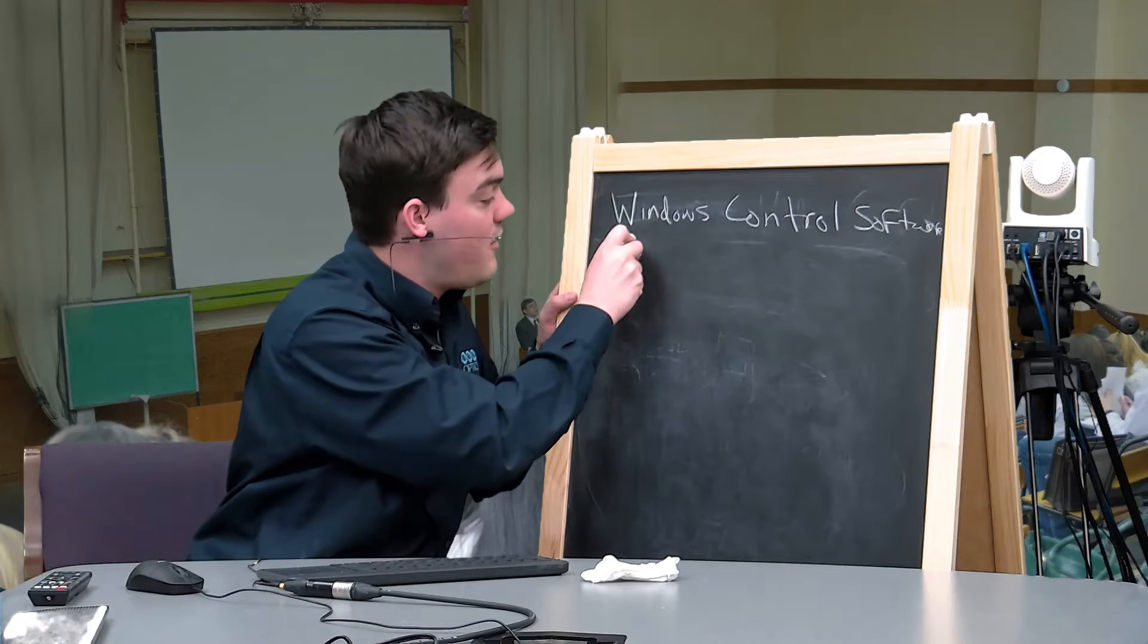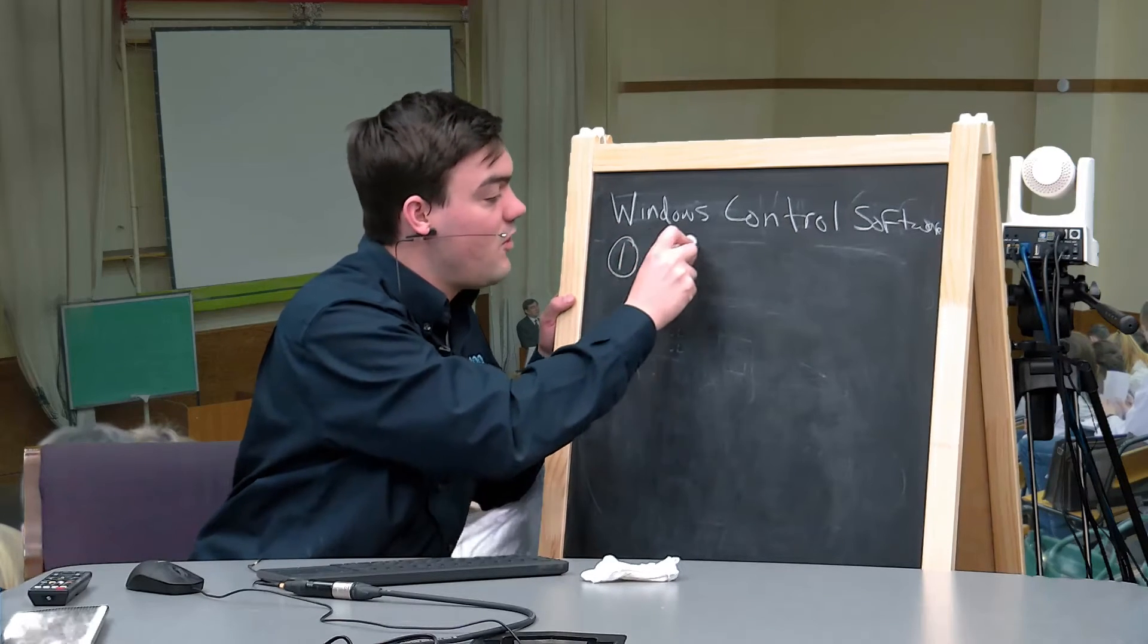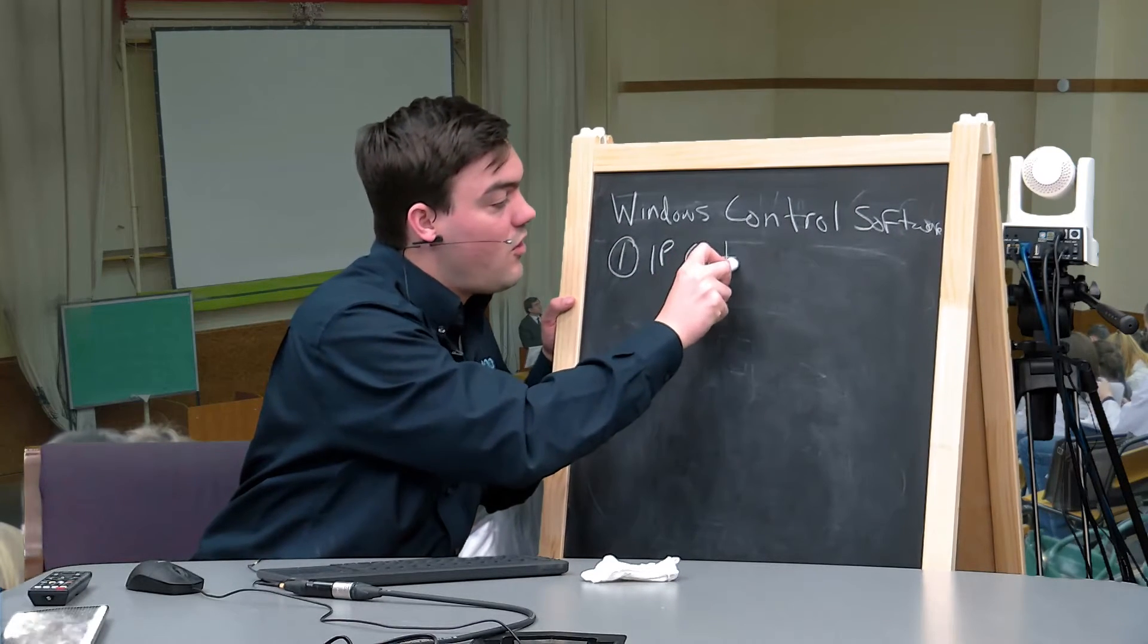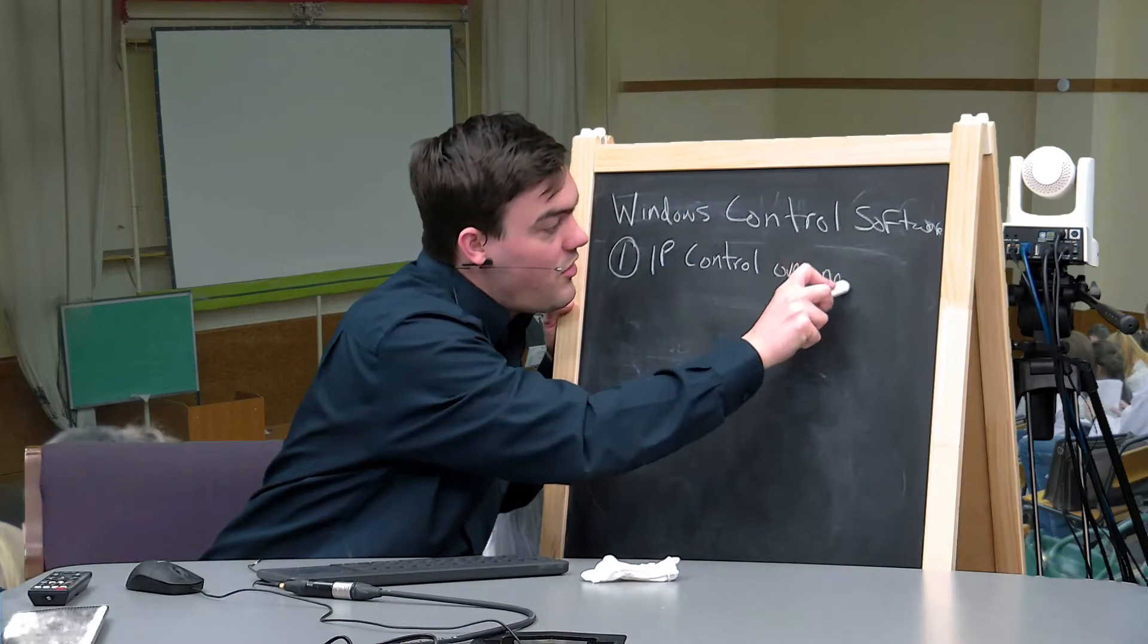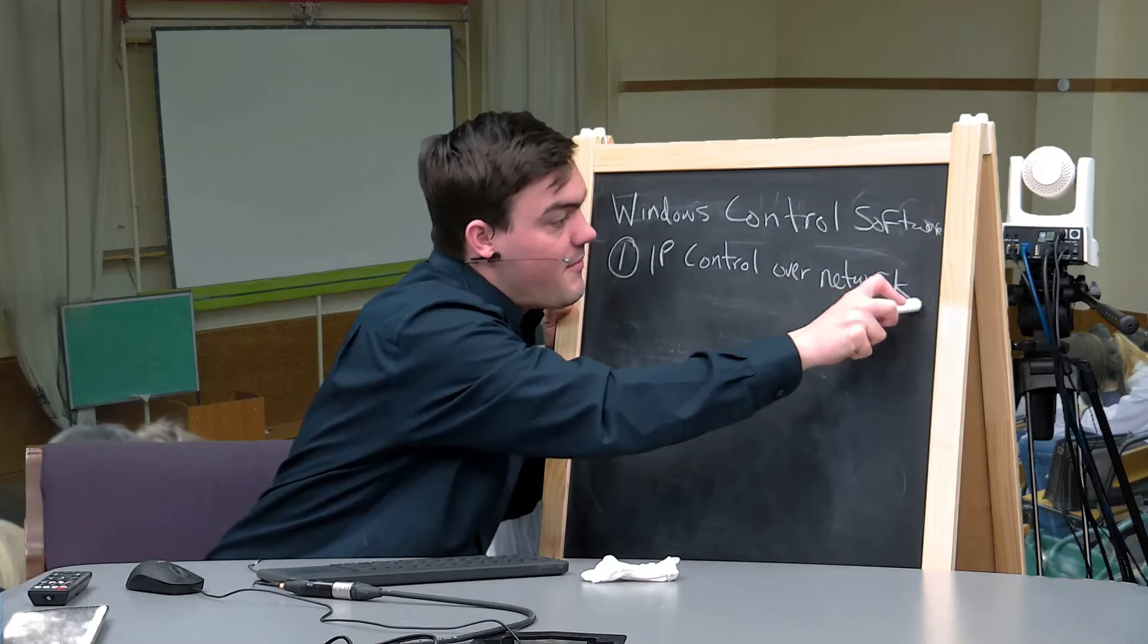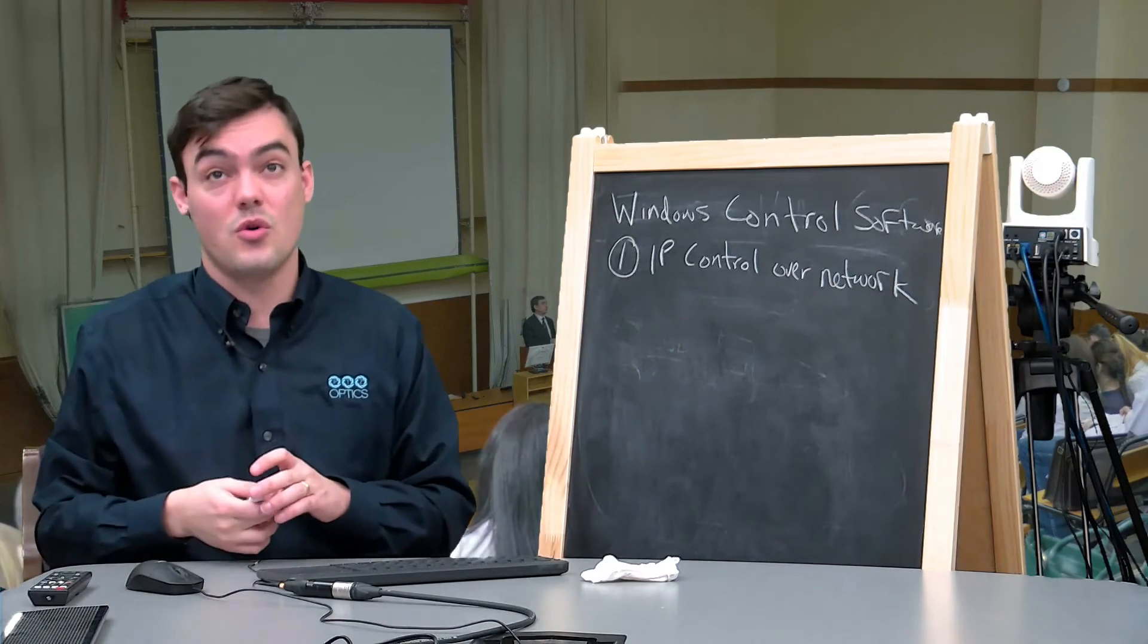So first of all number one is the IP control which is control over your network and all you need to do is plug the camera into the ethernet port on your network and you can have control.